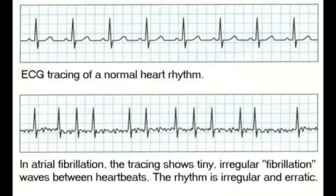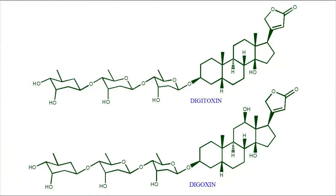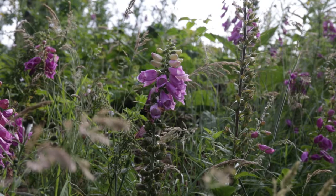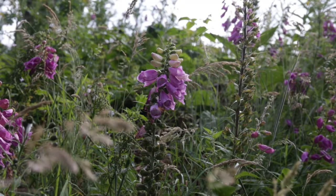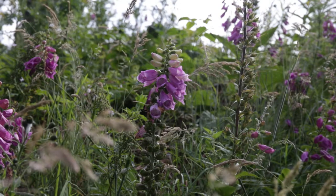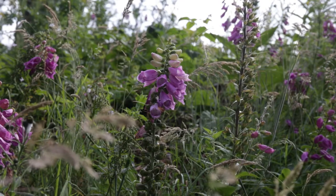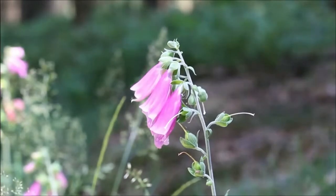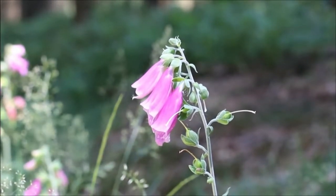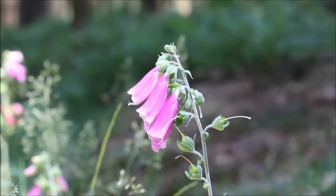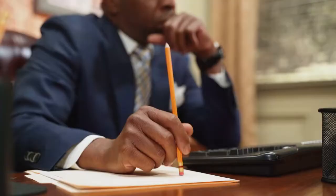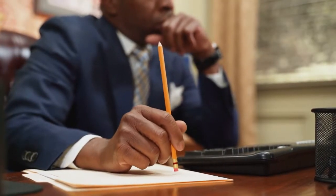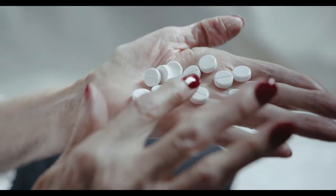Digoxin and digitoxin are also used to control rapid ventricular rate in patients with atrial fibrillation. They come from the foxglove plant known as Digitalis purpurea, Digitalis lanata, and other foxglove species. Foxglove is a popular garden ornamental and numerous hybrids and cultivars have been developed in a range of colors. Digoxin received FDA approval in 1954.